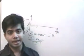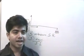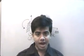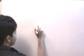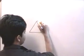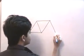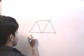Unknowns in a structure can be of two types: number one, the external support reactions, and number two, the internal member forces. As an example, let us take the case of a truss. I will take a detailed look at trusses later, but for now let us consider a very simple truss.